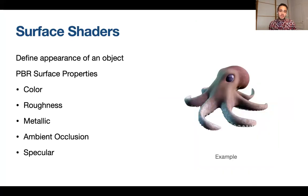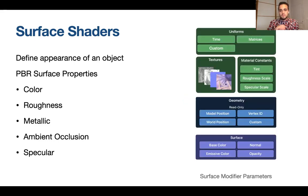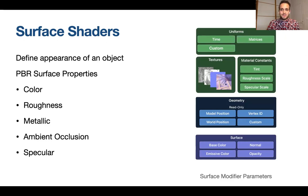There are also surface shaders, which allow you to define the appearance of an object. You can alter the different physically based rendering surface properties — color, roughness, metallic, ambient occlusion, and specular.